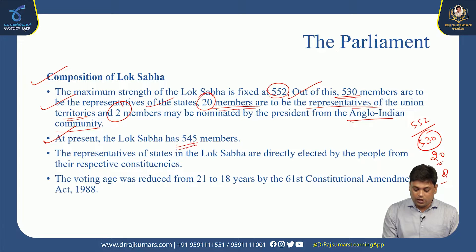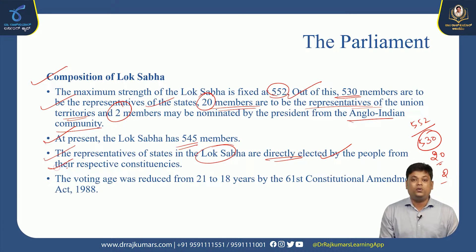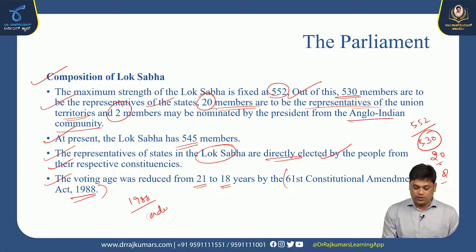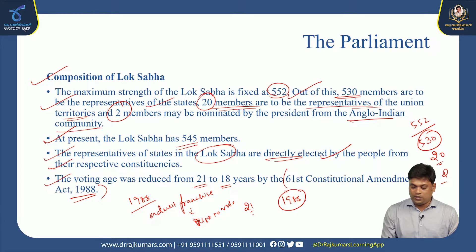At present, the Lok Sabha has around 545 members. The representatives of states in Lok Sabha are directly elected by the people from their respective constituencies. The voting age was reduced from 21 to 18 years by the 61st Constitutional Amendment Act of 1988. Before 1988, the adult franchise age — meaning the right to vote — was 21 in India.